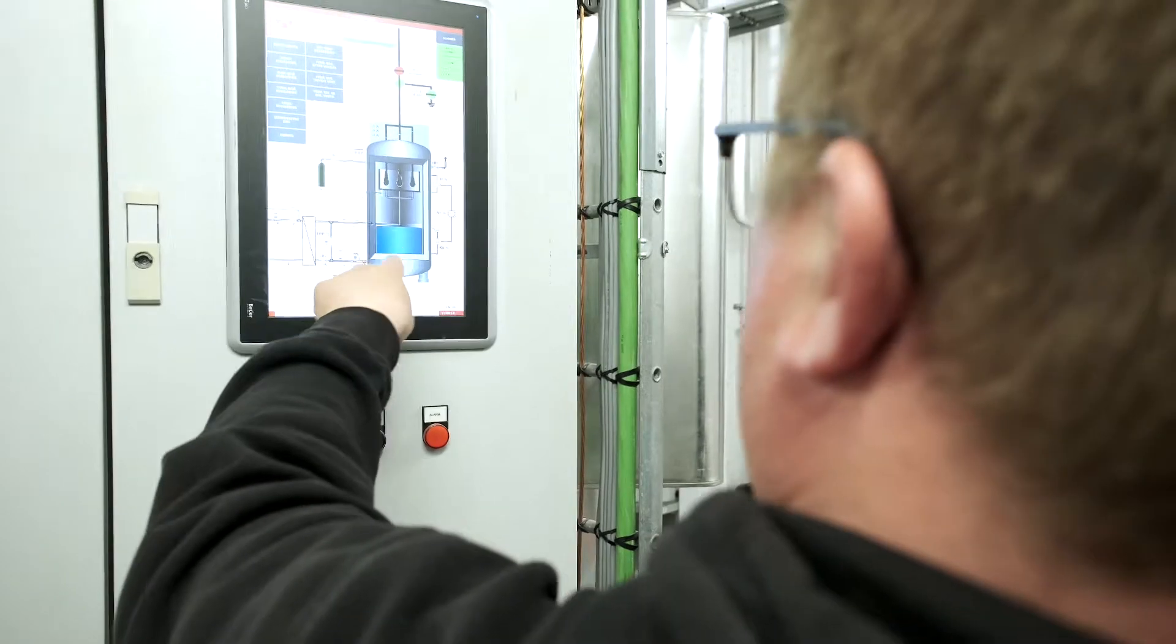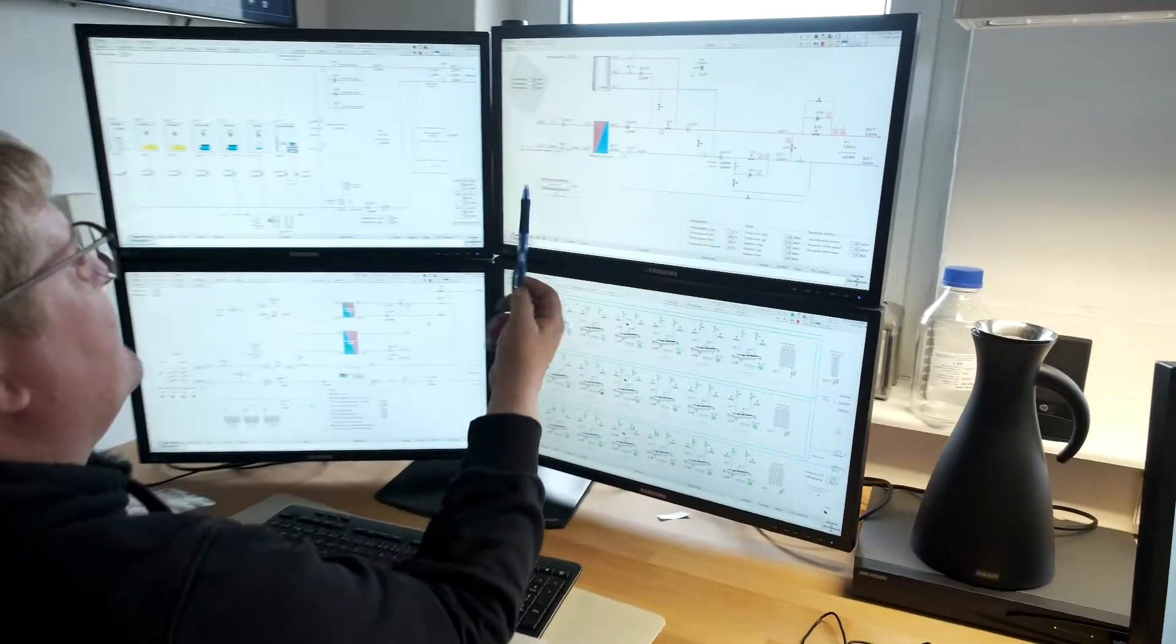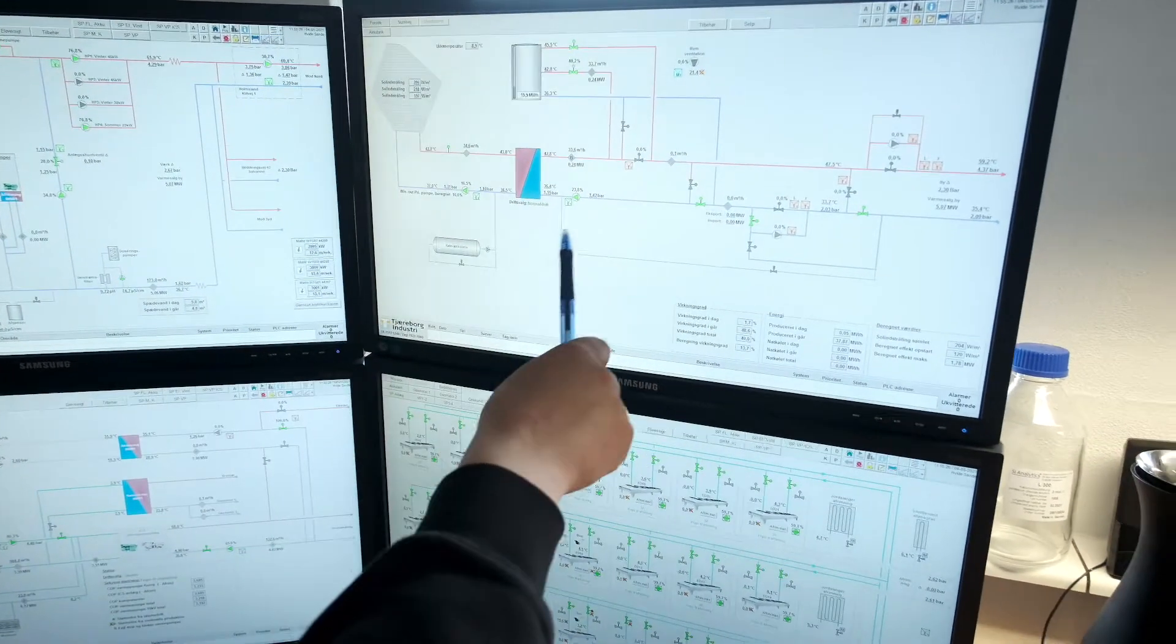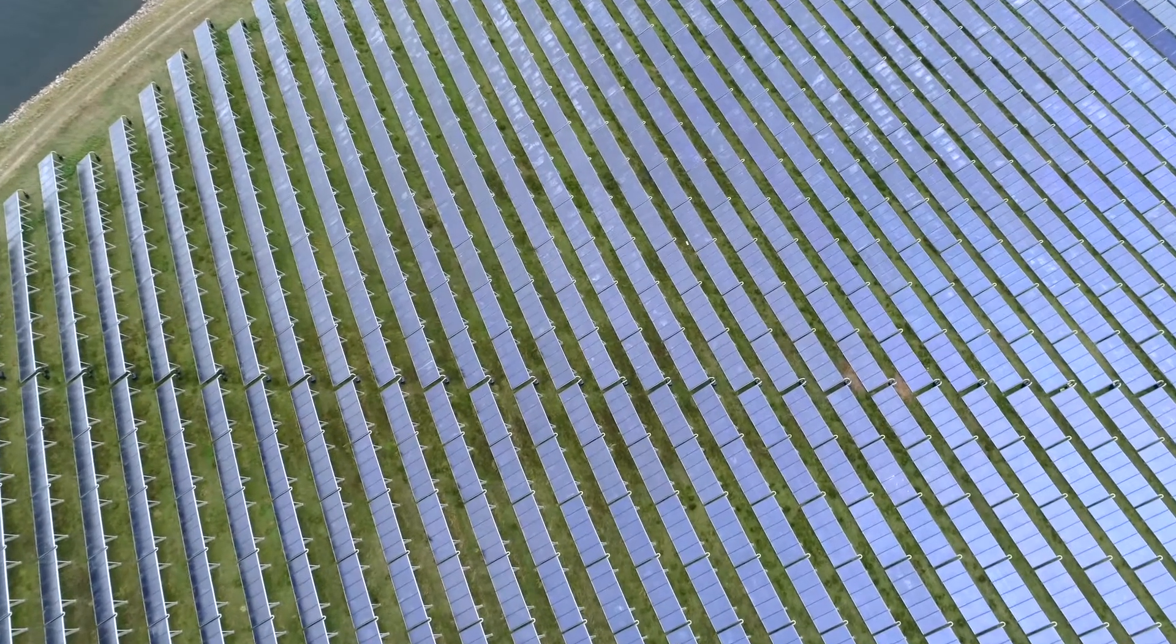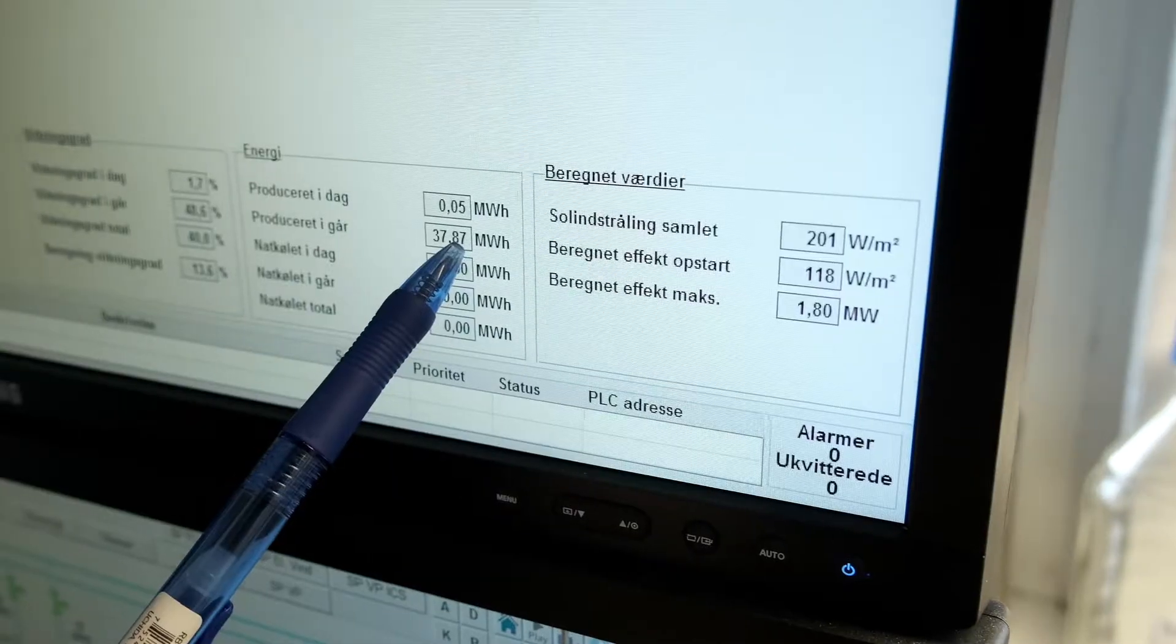This is our solar collectors. Today we don't have any sunshine, so we're not producing that much. Yesterday was a good day - 37, almost 38 megawatt hours of heat produced. Today, almost nothing.